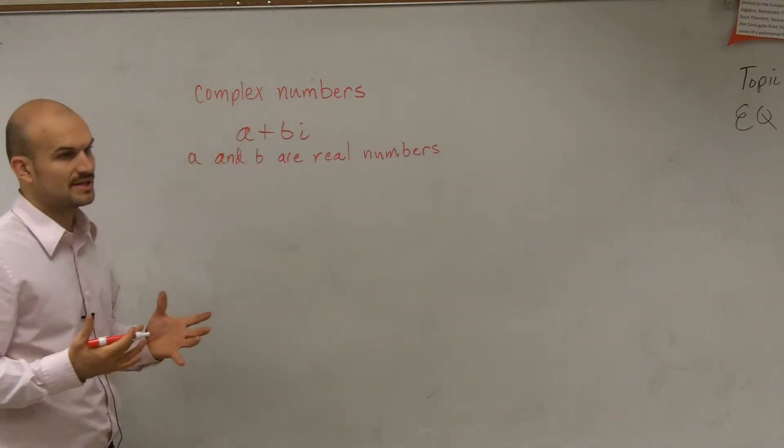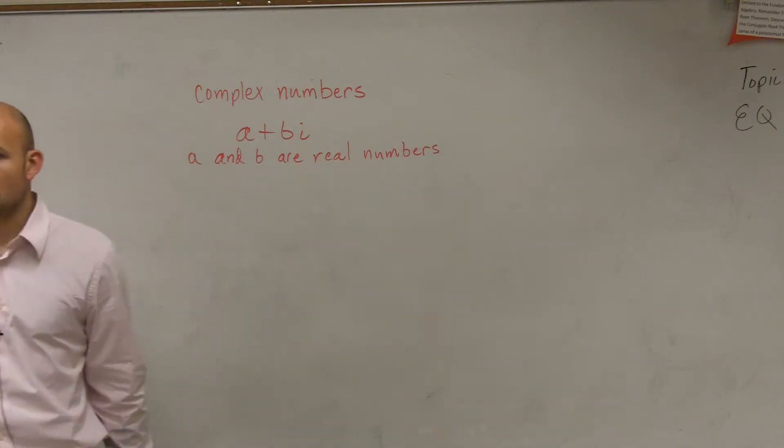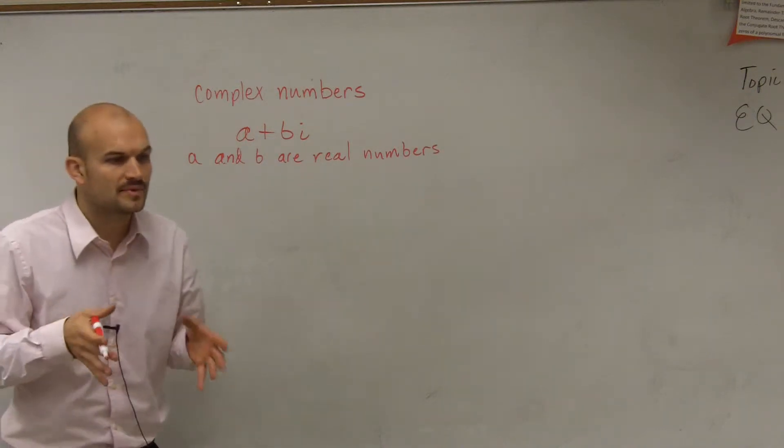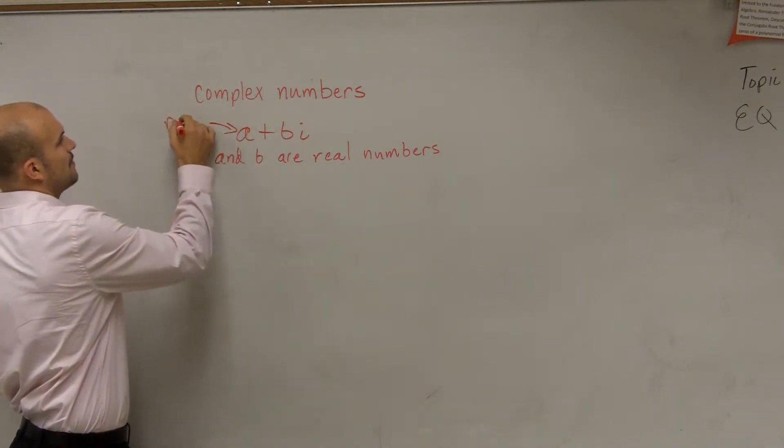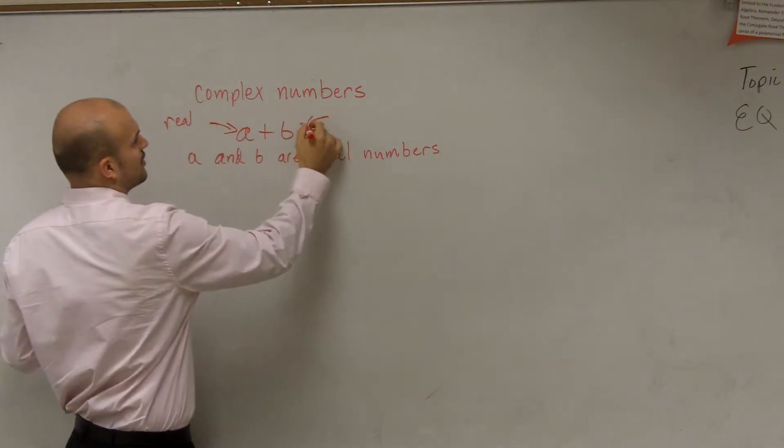Now, when dealing with complex numbers, complex numbers can be kind of real or imaginary. What they have is they have a real part, which is a, and then the imaginary part.